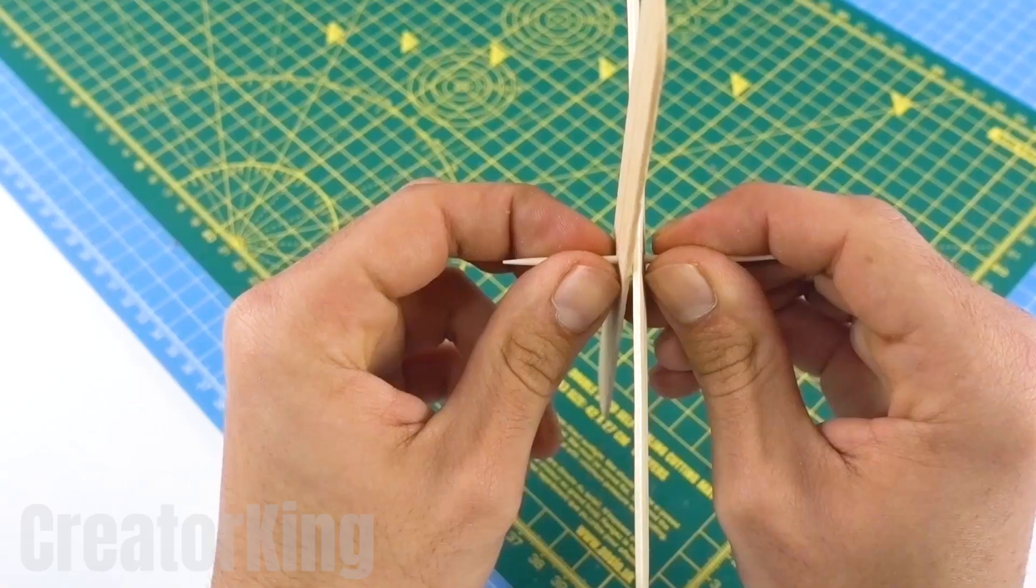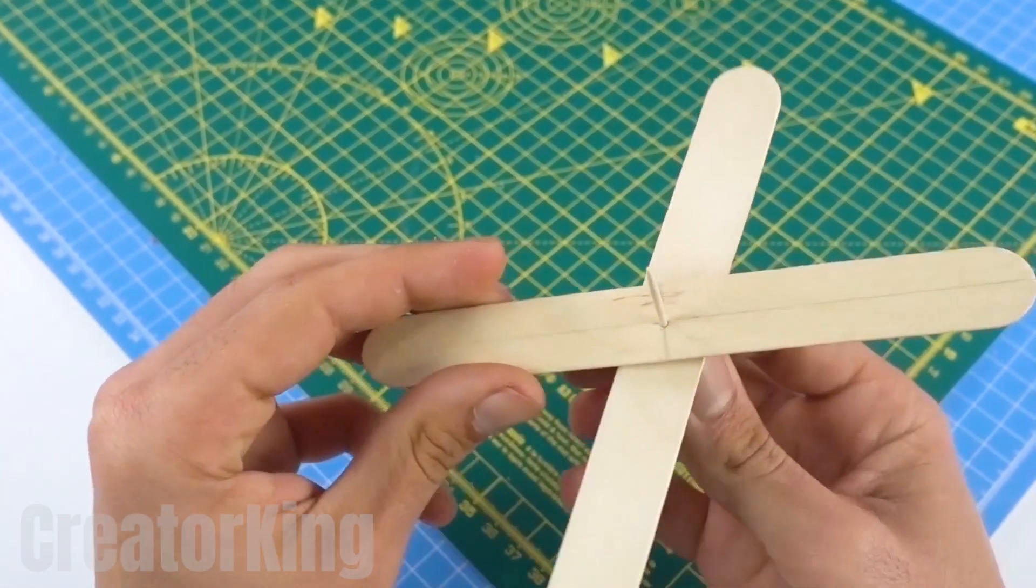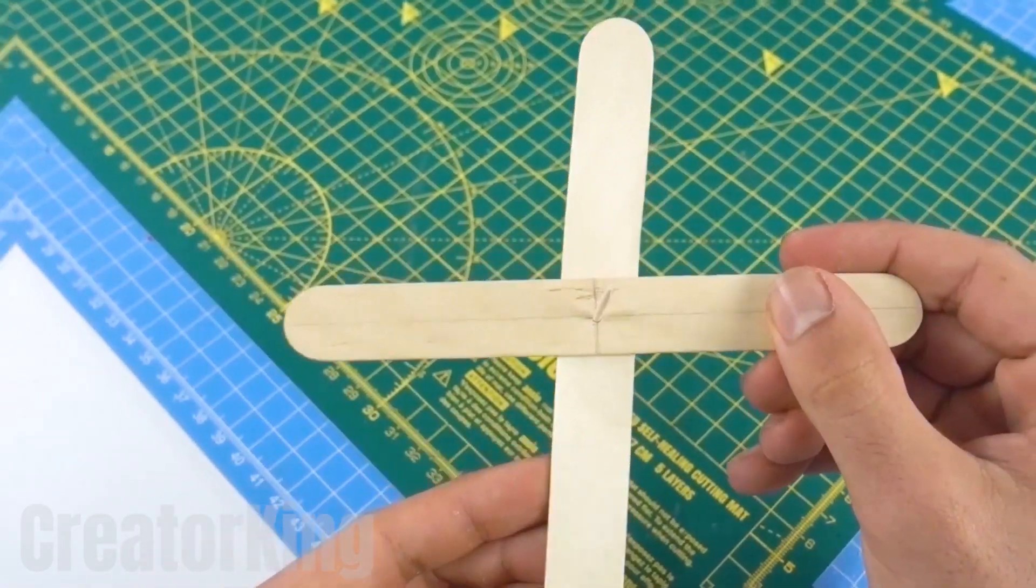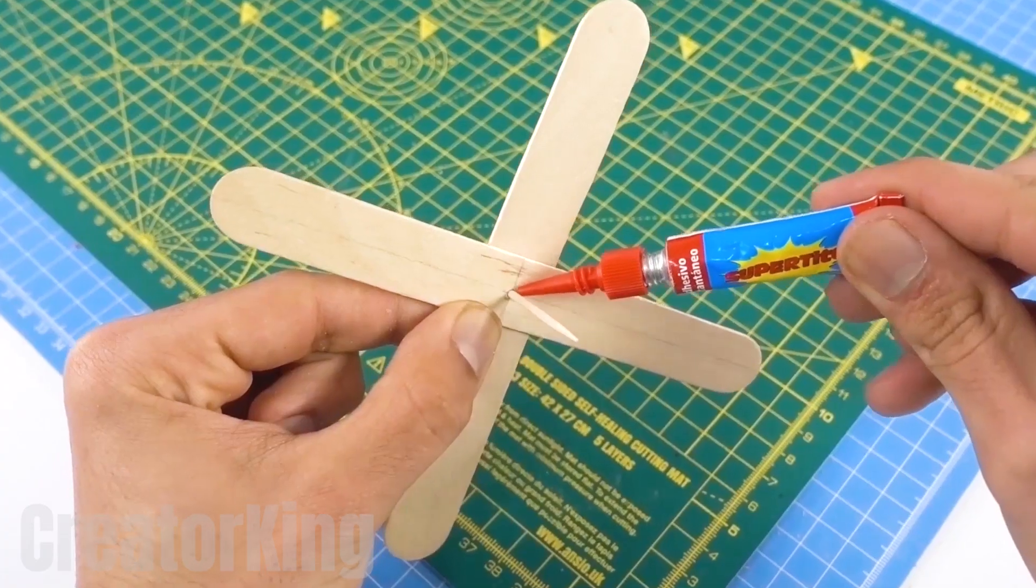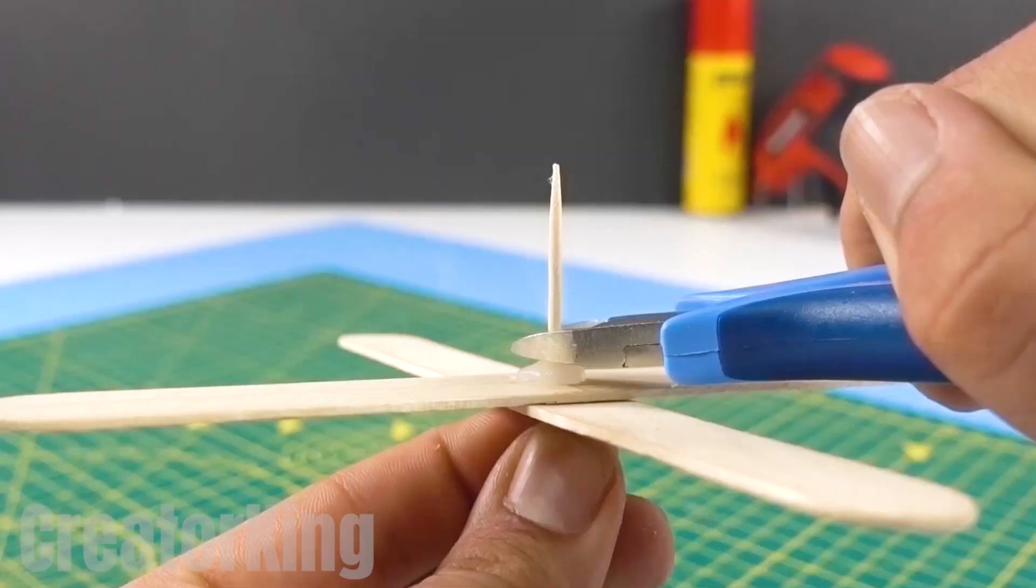Since here we love to secure everything, we'll be doing the same with the crosshead we've just formed. Then cut off the excess at both ends.